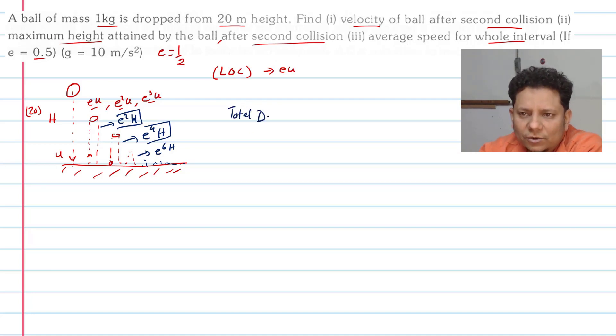So your total distance traveled is (1 + e²)/(1 - e²)·H, where H is the original value. The total time taken is equal to (1 + e)/(1 - e) multiplied by the first time. Otherwise it will take a lot of time.